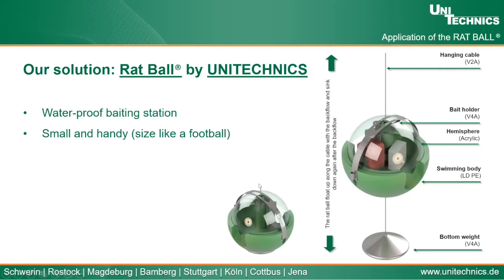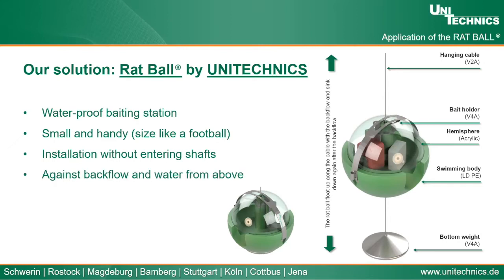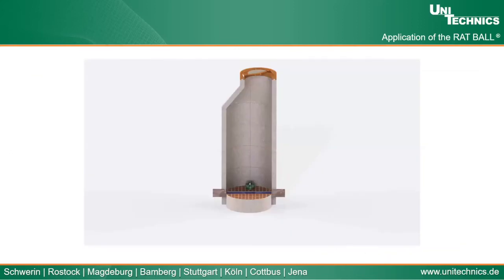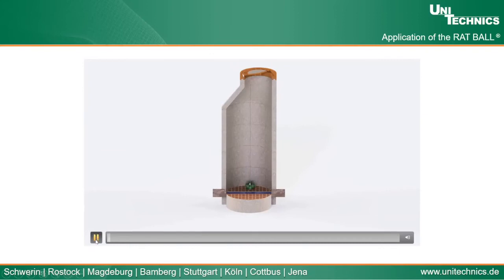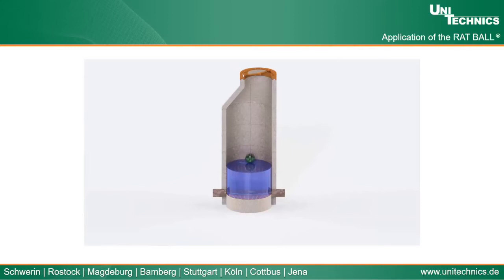Other advantages of the Rat Ball: it's very small and handy, with a size like a football — around 250 millimeters. It can be installed without staff entering the shafts. It works against backflow and water from above, and when the bait is consumed it can be quickly changed. When a rat control campaign in one place is finished, the Rat Ball can easily be transferred to other shafts wherever needed. Here we have a small video showing the mechanisms of the Rat Ball with backflow — it swims up with the weight still below it, and when the backflow is gone it sinks down again.